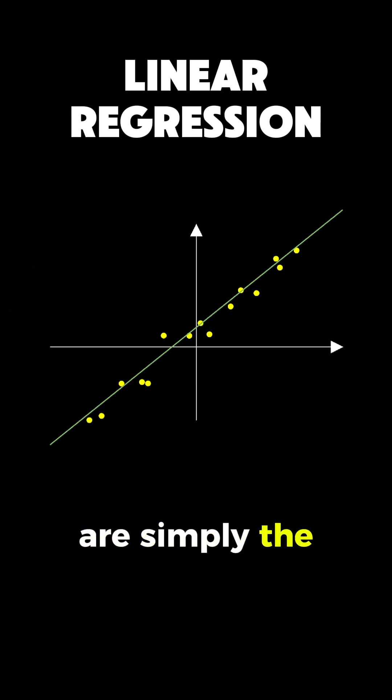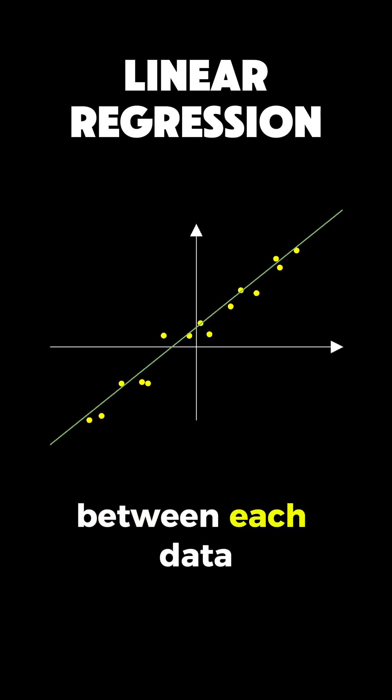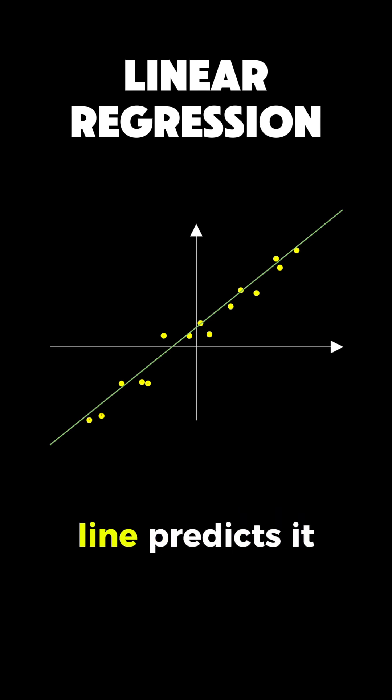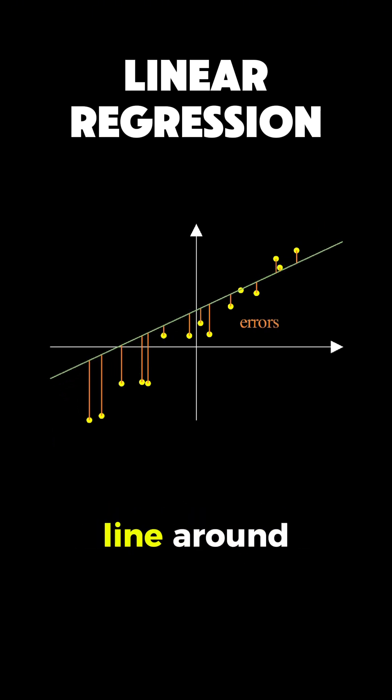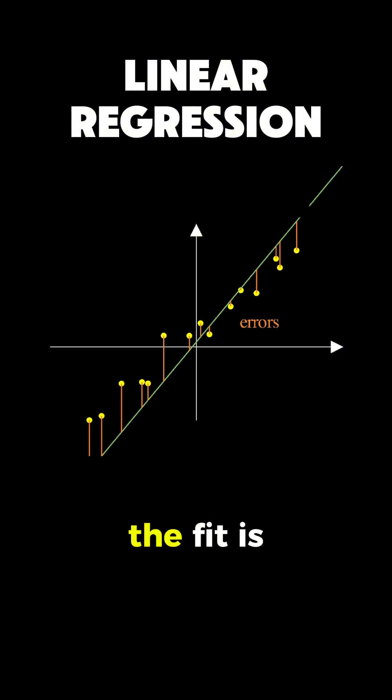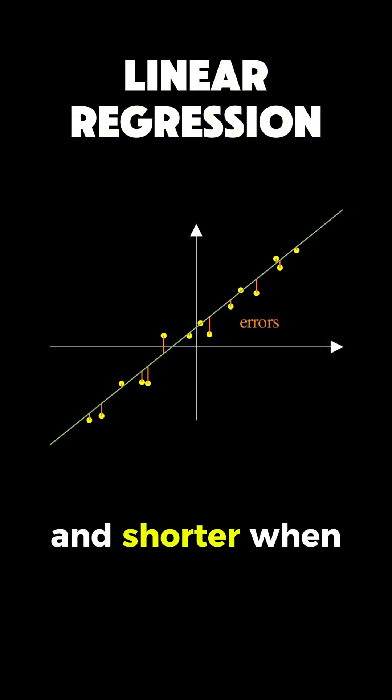And these mistakes are simply the vertical distances between each data point and where our line predicts it should be. You can see these orange lines showing the errors and notice how they change as I move the line around, getting longer when the fit is poor and shorter when the line gets closer to the pattern in the data.